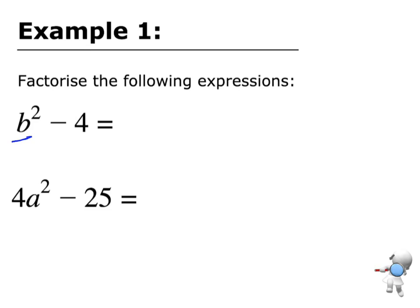And how I do that, b squared is a squared number, 4 is a squared number. So that's the same as b squared minus 2 squared.